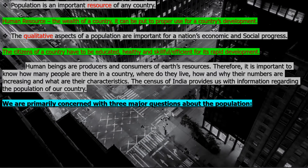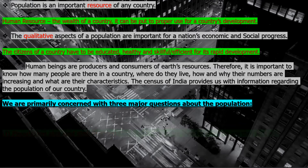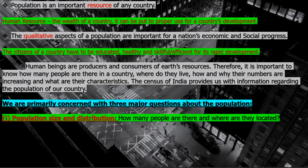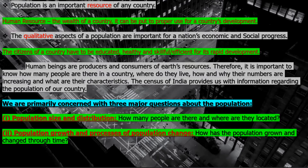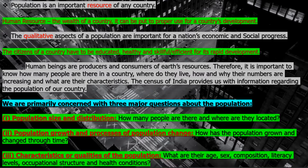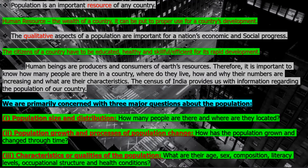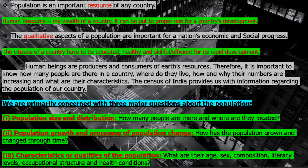We are primarily concerned with three major questions about population in this chapter. The first is population size and distribution — how many people are there and where they are located. The second is population growth and process of population change — how has population grown and changed through time. Third, characteristics or qualities of the population — their ages, sex composition, literacy levels, occupational structure and health conditions.